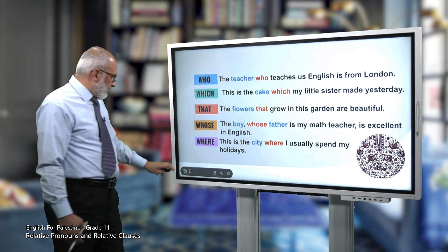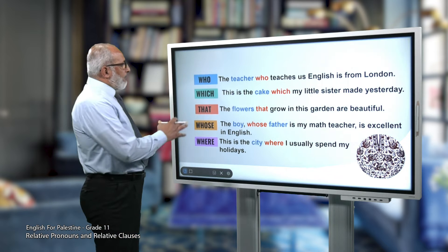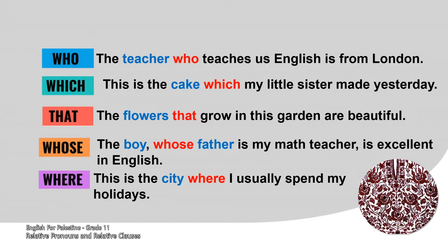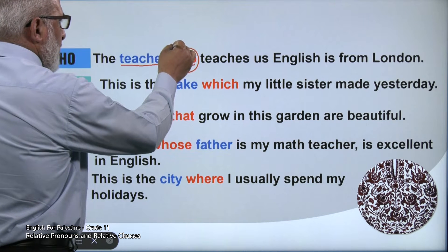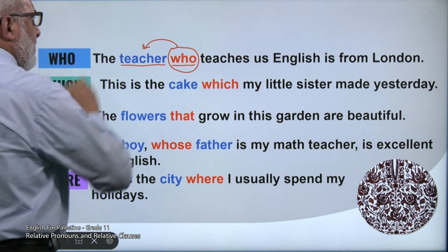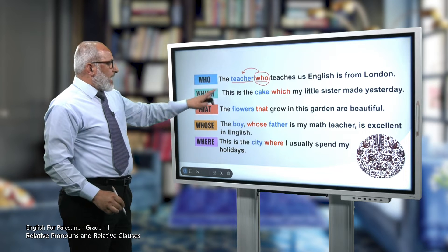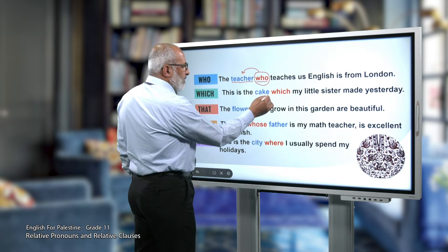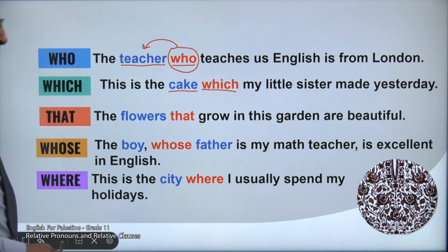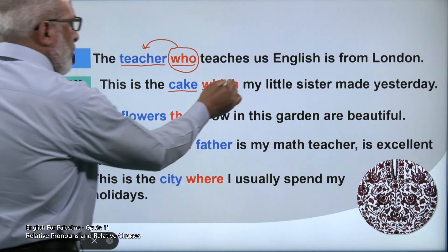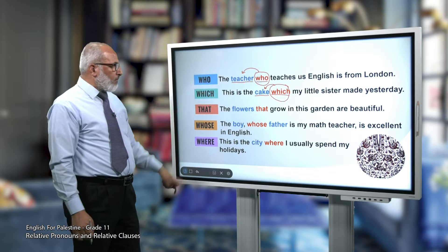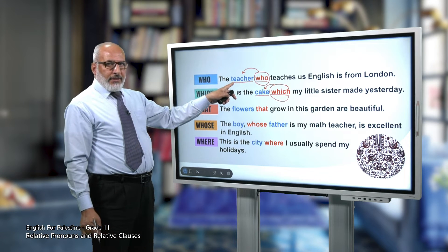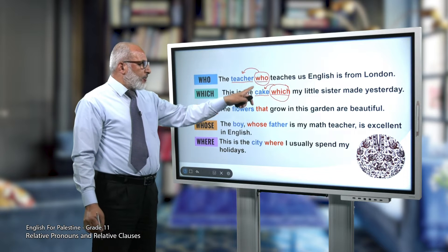Let's now see some examples. The first one: 'The teacher who teaches us English is from London.' Here we use 'who' because it relates back to a person — teacher. Second one: 'This is the cake which my little sister made yesterday.' Here we use 'which' because it relates back to a thing — cake.